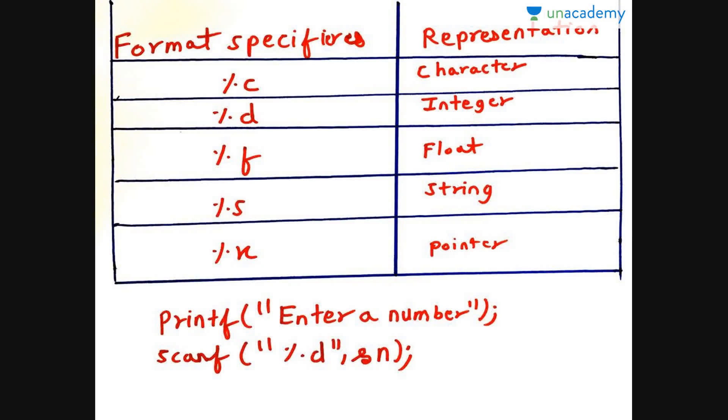Now there are certain format specifiers for taking in the input. Those are %c, %d, %f, %s, and %x. Now we all know %c will be for character, because it starts from c. %d will be integer. You can also use %i but we will be using %d. You can remember it as d for digit.